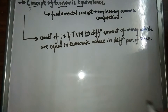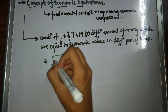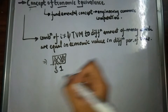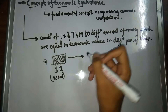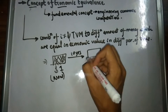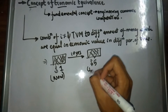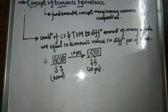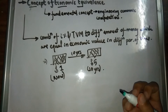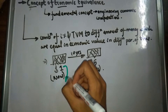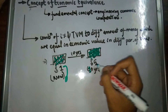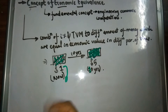Let me give you a simple example. Right now, suppose you can buy a packet of biscuits with one dollar. Now, in 10 years from now, for the same packet of biscuit, it is going to cost five dollars. So in terms of this packet of biscuit, one dollar and five dollars are economically equivalent — they are not equal to each other, but they are economically equivalent.